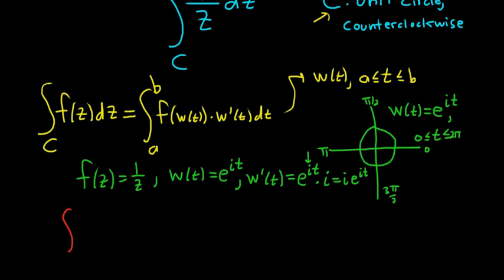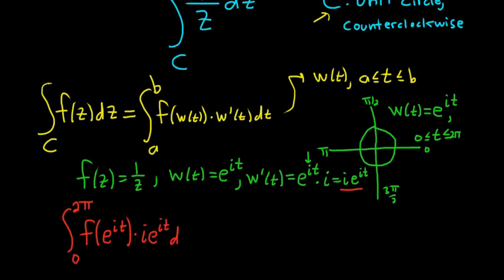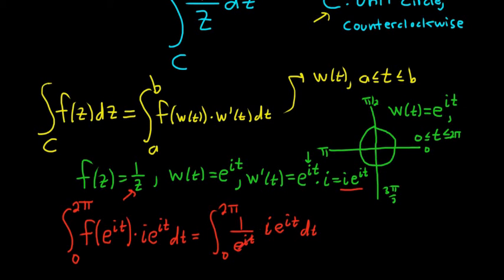Now we can go ahead and plug everything into our formula. It's going to be the definite integral from 0 to 2π of f of e to the it times w prime, which is i e to the it, dt. This equals the definite integral from 0 to 2π of 1 over e to the it, times i e to the it, dt. The nice thing is the e to the it's cancel, and so we get the definite integral from 0 to 2π of i, dt.